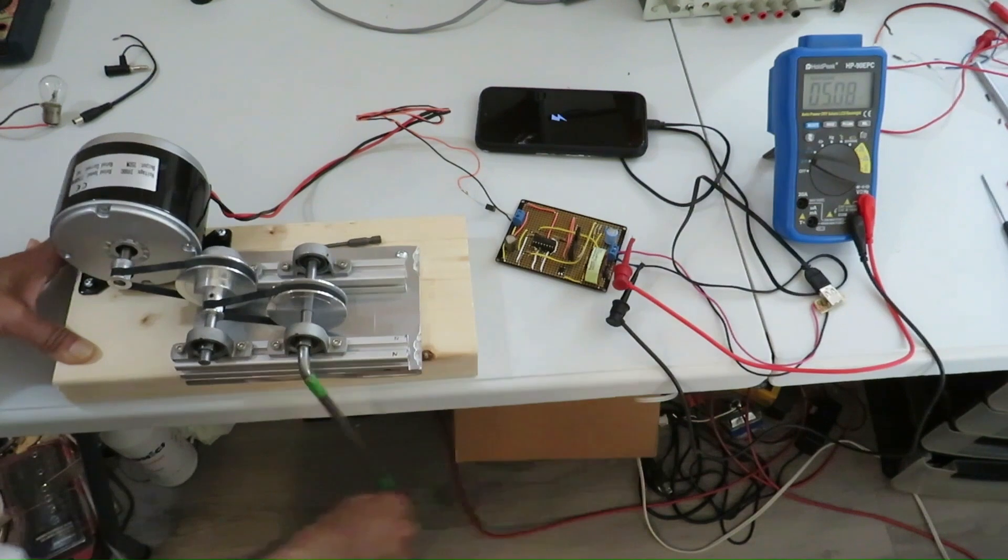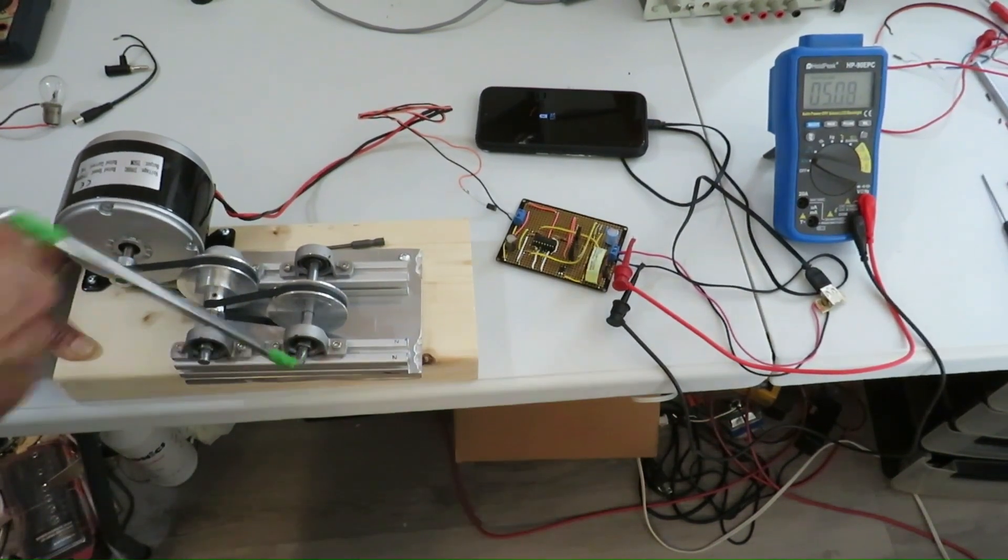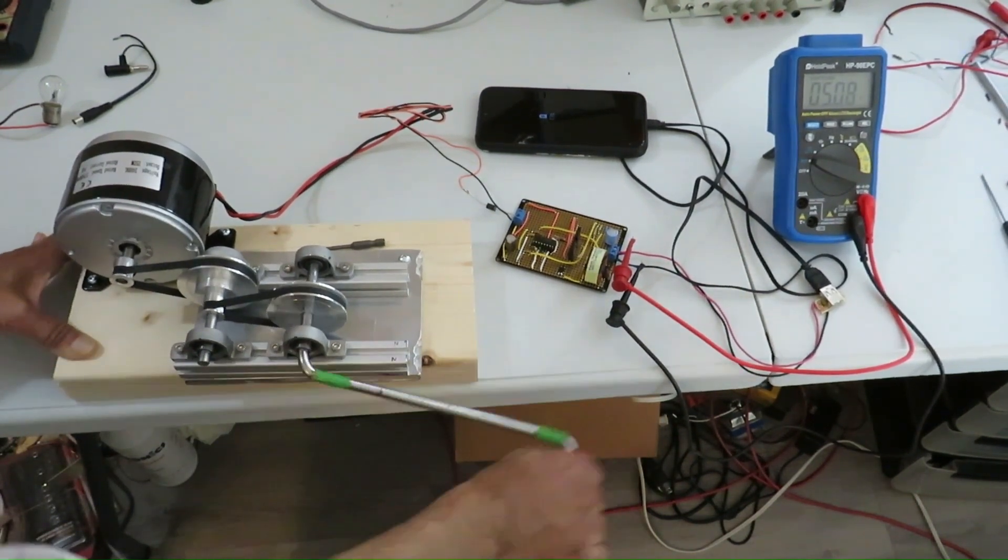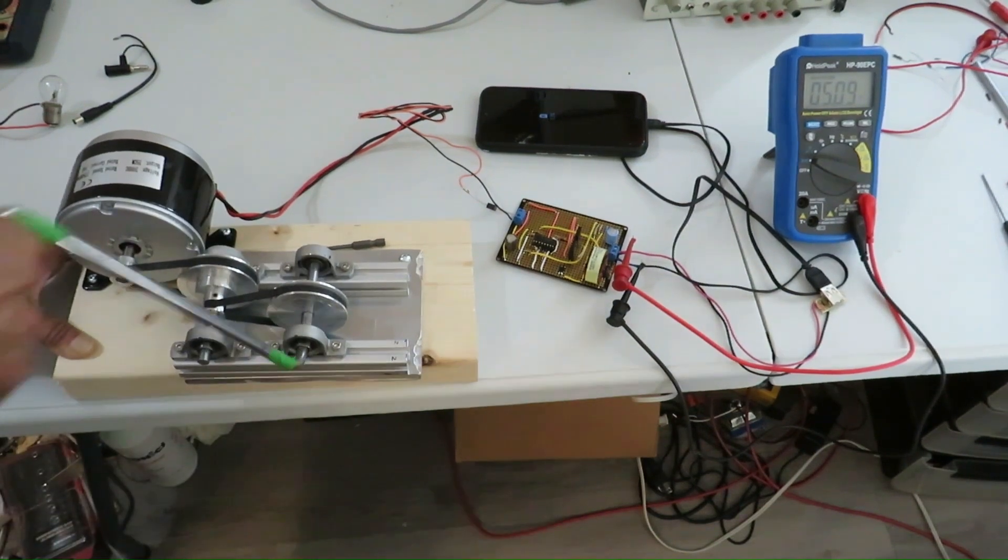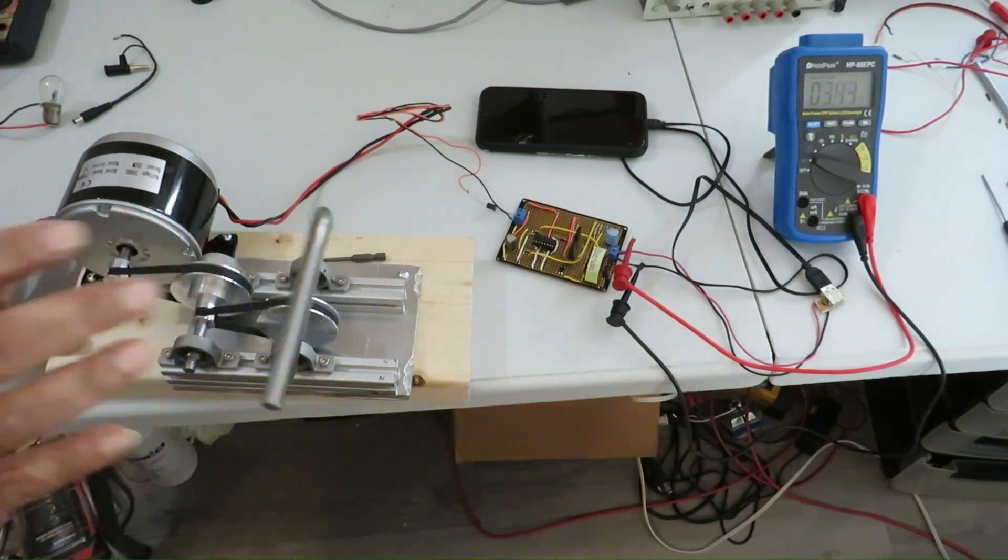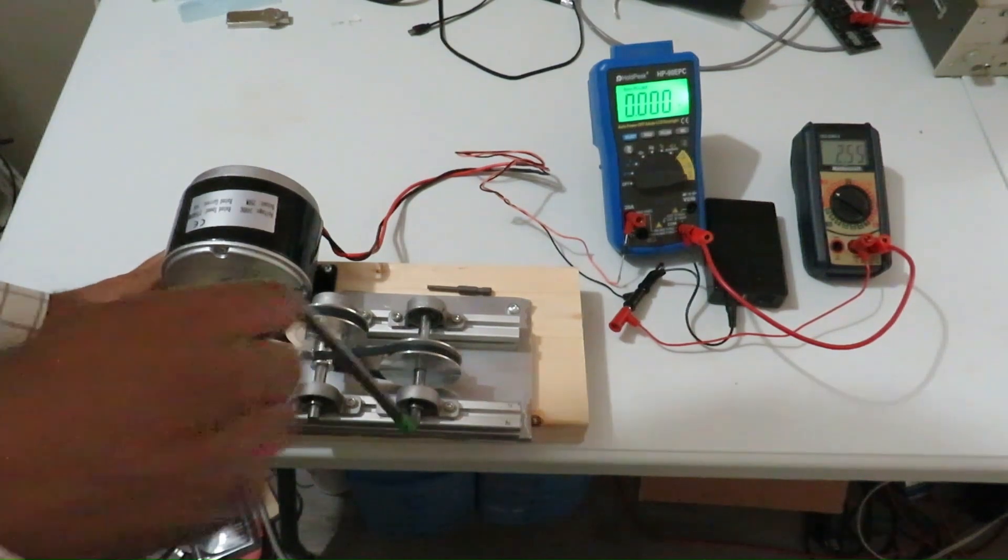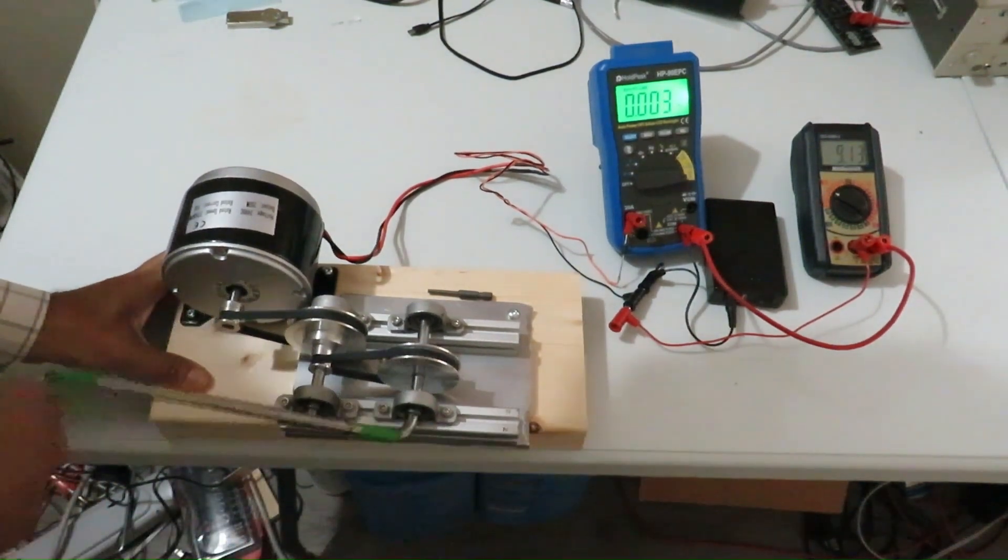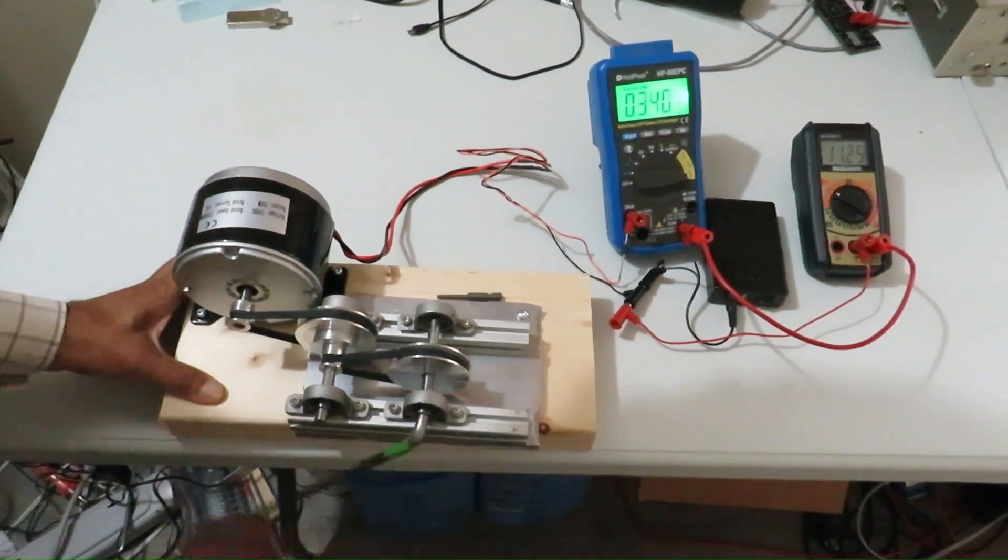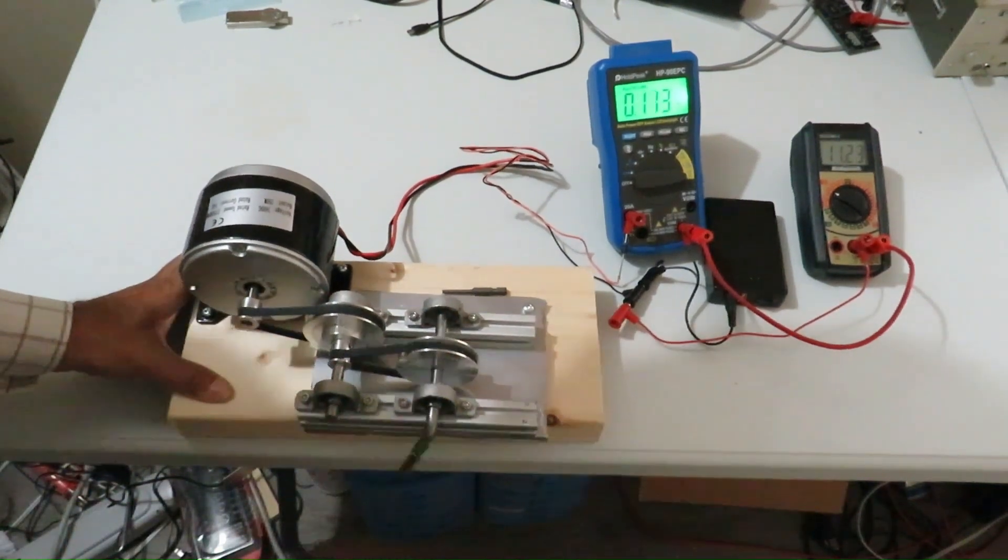Now I am charging a lithium-ion battery pack. The two meters show the voltage and current. Now it takes a lot more higher voltage than 5 volts.